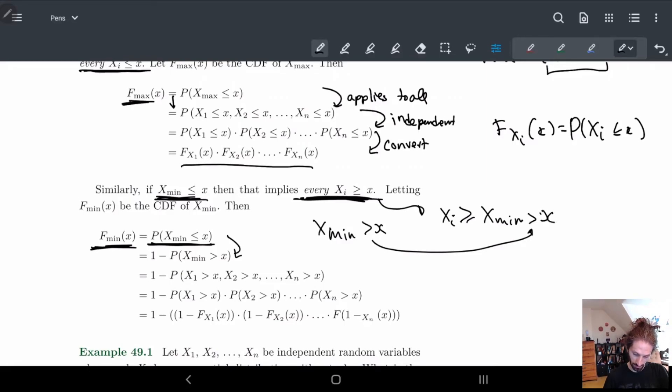Greater than x, little x. And so this is why we have each one has to be greater than, strictly greater than, xi.